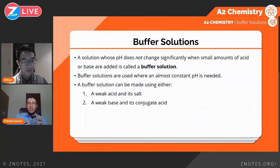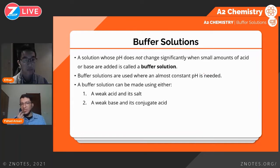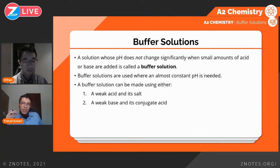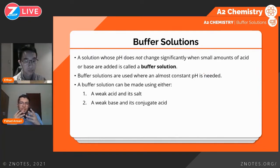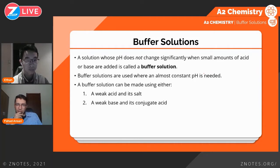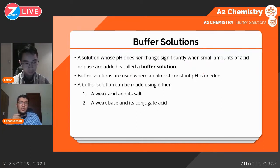So buffer solution — the simple definition, and you will be asked a lot about this — it's a solution that does not change its pH significantly when small amounts of acid or base are added. So if you add a small amount of base or acid to a buffer solution, its pH will not change. Buffer solutions are normally used where an almost constant pH is needed, and we will see one very interesting use of a buffer solution later in this lesson.